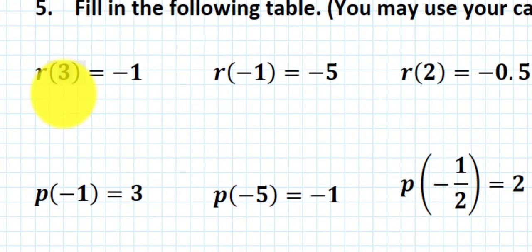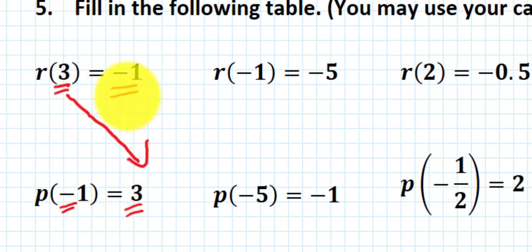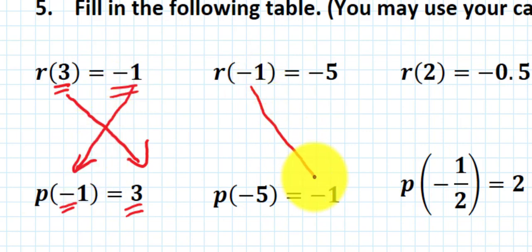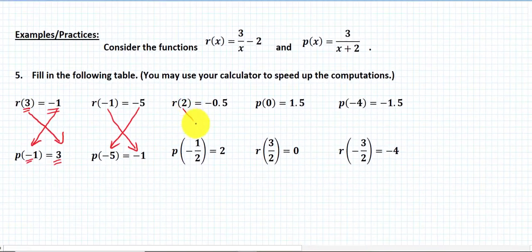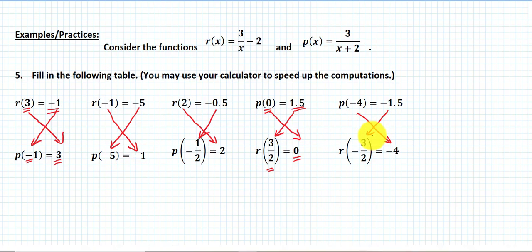When 3 is the input of r, negative 1 is its corresponding output. When negative 1 is the input of p, 3 is the corresponding output — the input became the output and the output became the input. This pattern holds for all input-output pairs in the first and second rows. When 0 is the input of p, 1.5 is the output; when 1.5 (or 3/2) is the input of r, 0 is the output. Again, an exchange between input and output.